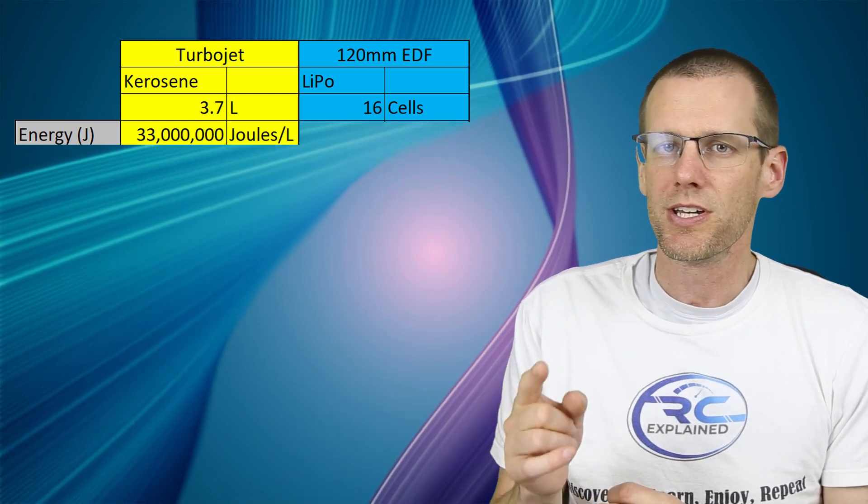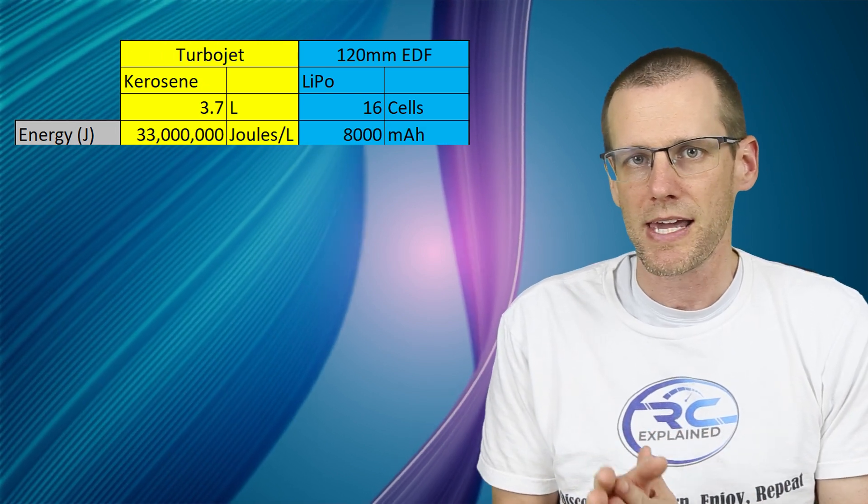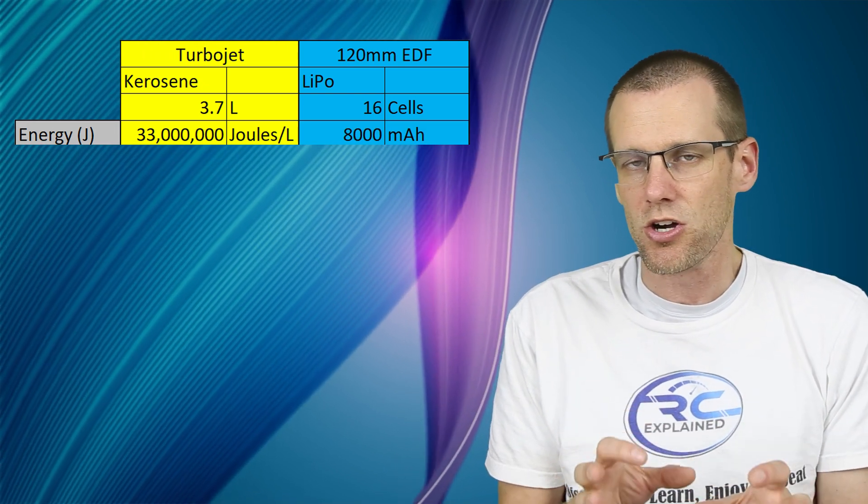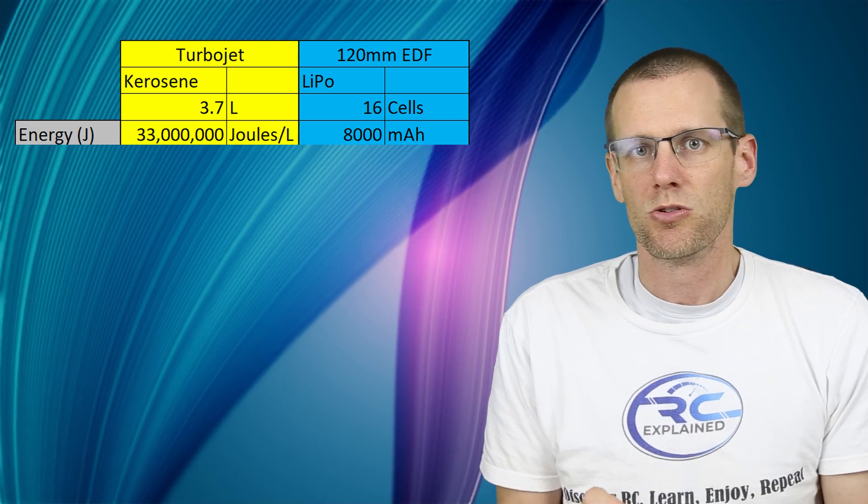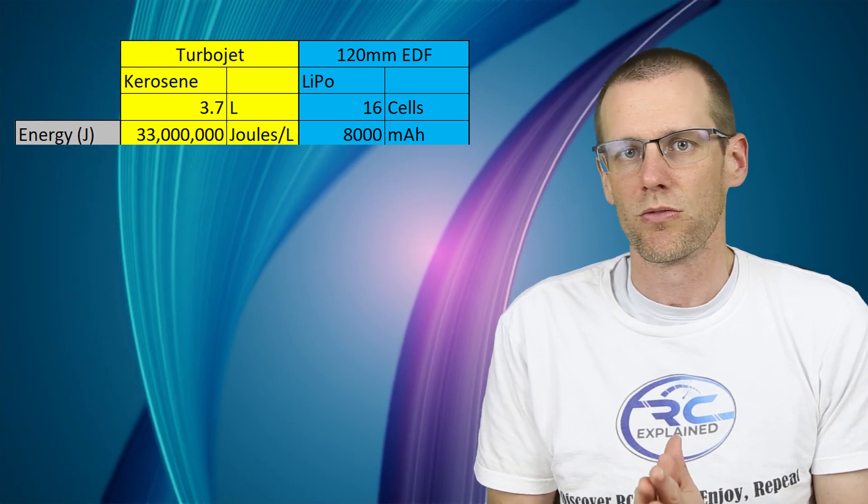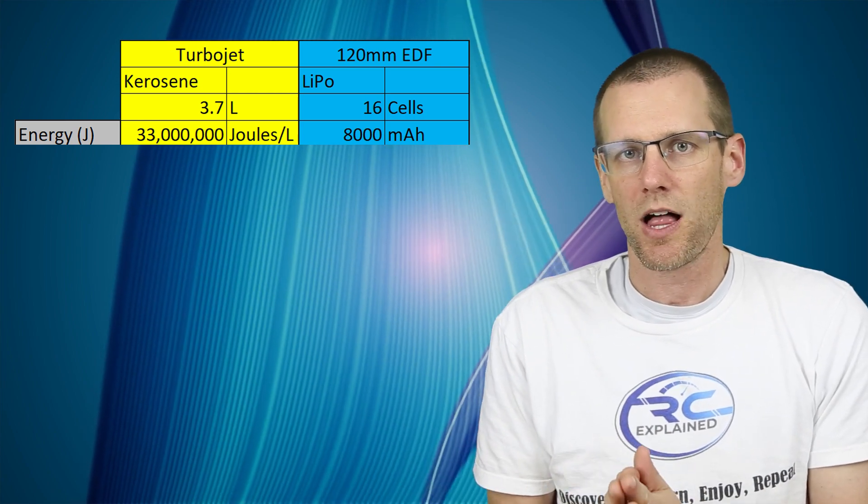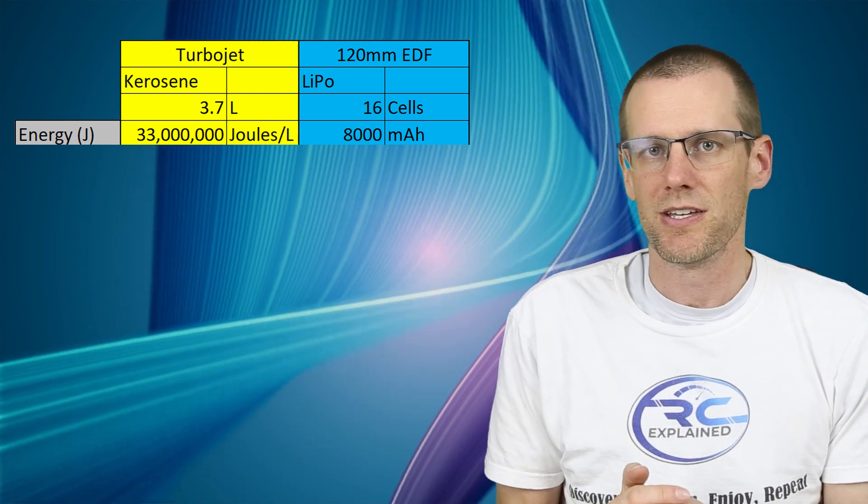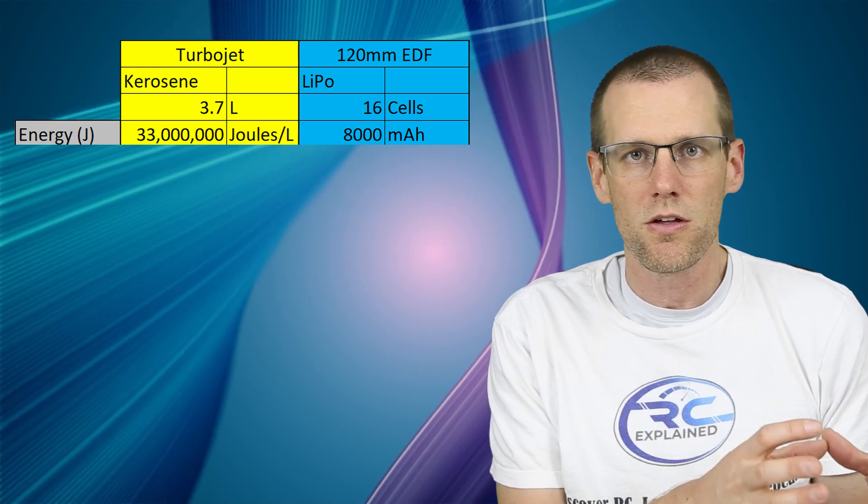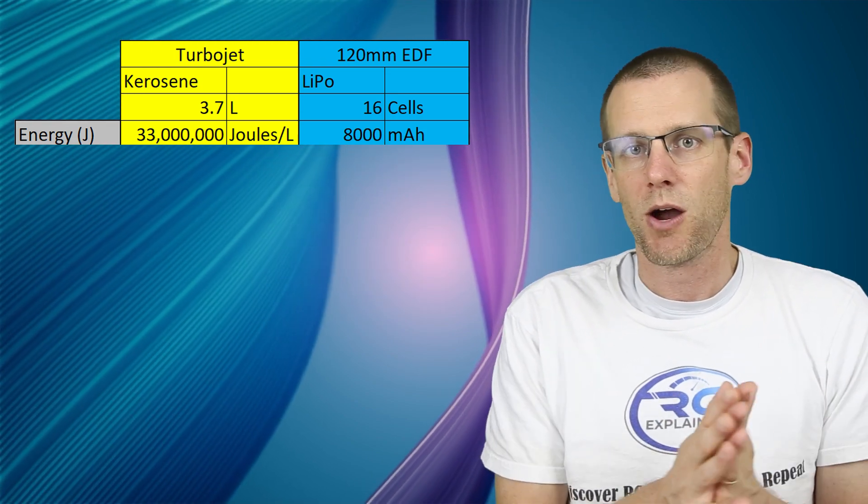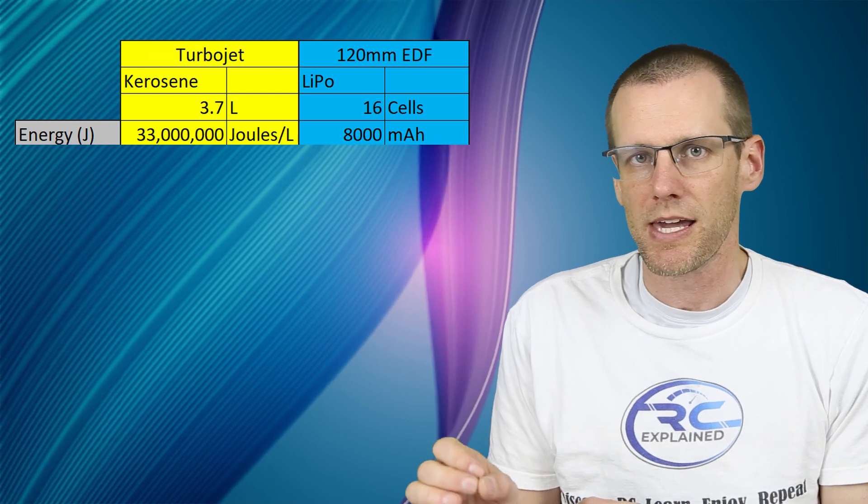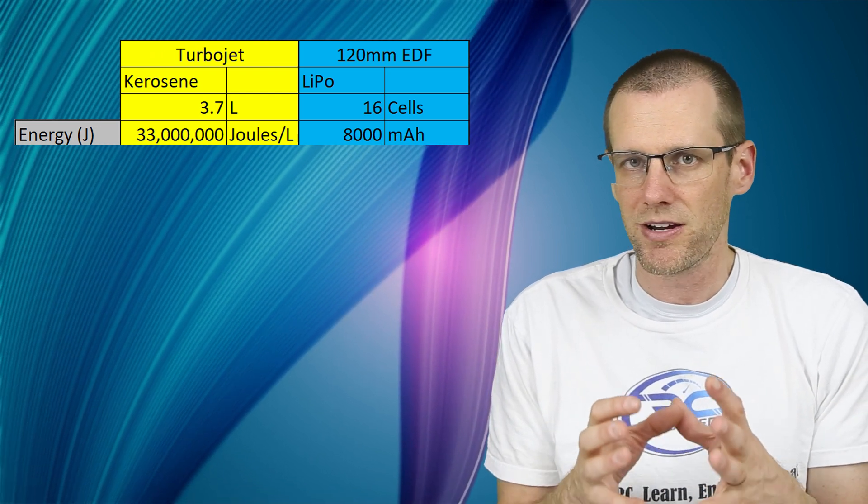And not only are we going to use 16 cells, we're going to use 8,000 milliamp hour. Now this is a really good size battery pack in order to move any type of radio control vehicle along. Another assumption that we're making here is that we're completely using all of the jet fuel that we have on board and all of the milliamp hour capacity in our battery. Now that's obviously not realistic. We never want to do that. And in fact, if you do this with a battery pack, you're going to get yourself into trouble and you're going to be burning through a lot of money.